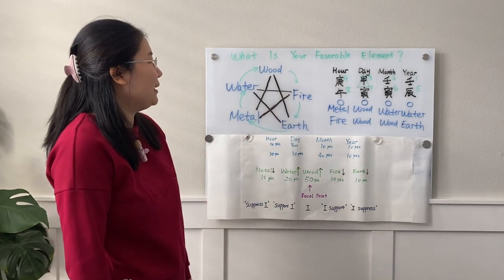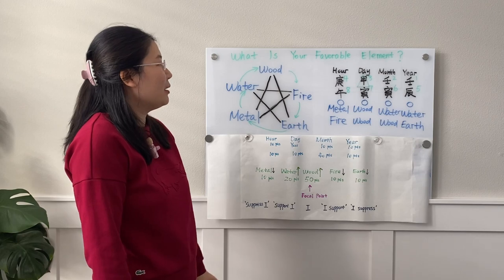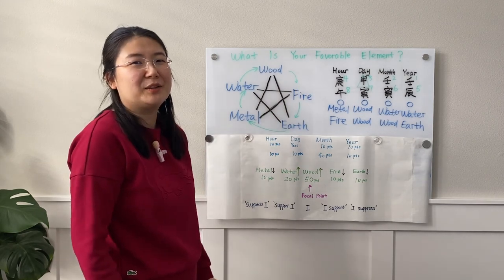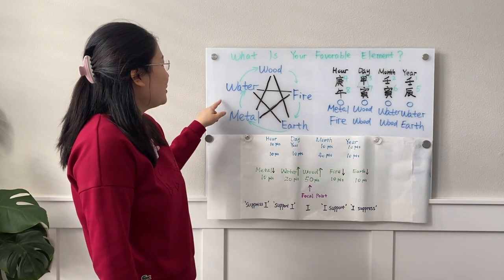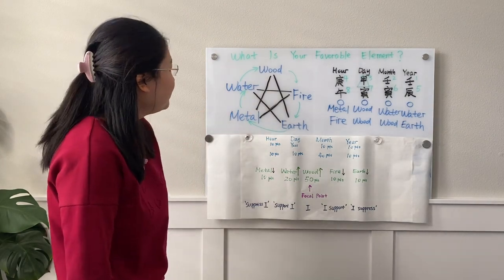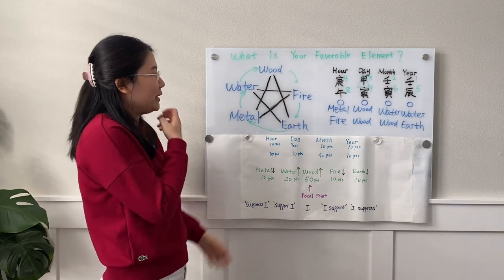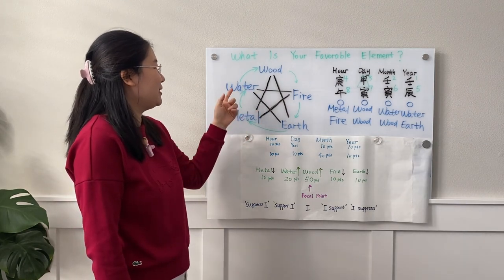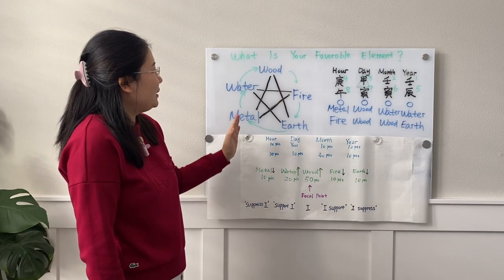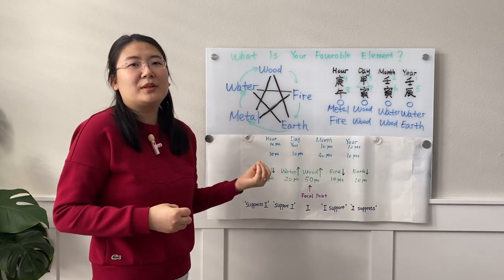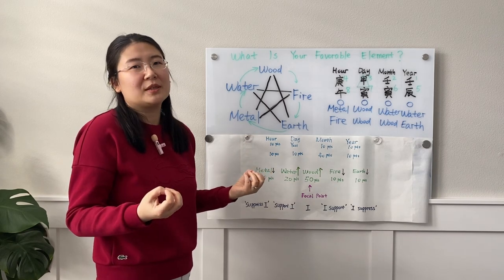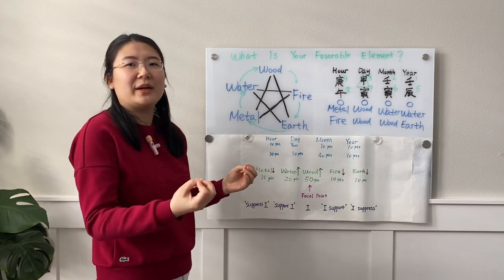Before I talk about how to come up with that conclusion, it starts with the relationship amongst the five elements. Last episode I was talking about the five elements, and there's yin and yang of each one. They have the main supporting versus suppressing relationship — those are the two key words here: support and suppress.